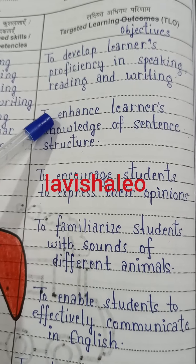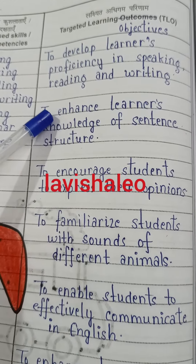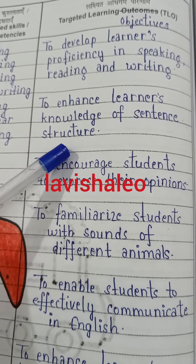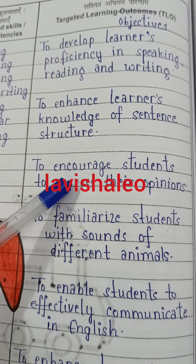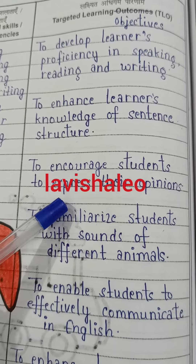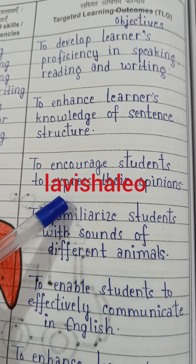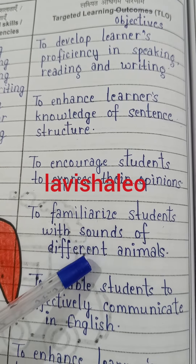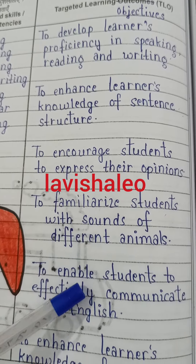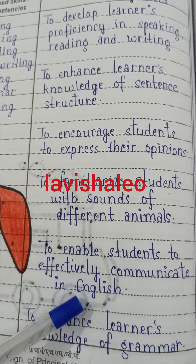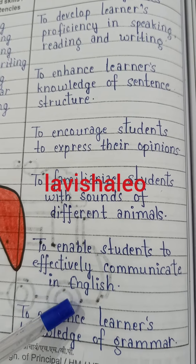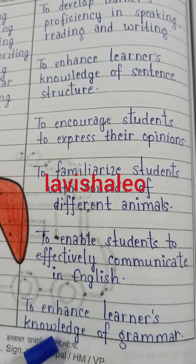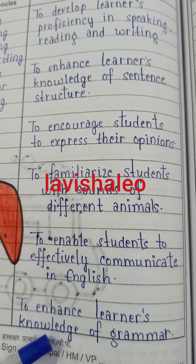The targeted learning objectives are: to develop learners' proficiency in speaking, reading, and writing; to enhance learners' knowledge of sentence structure; to encourage students to express their opinions; to familiarize students with sounds of different animals; to enable students to effectively communicate in English; and to enhance learners' knowledge of grammar.